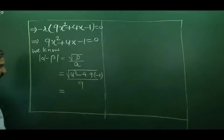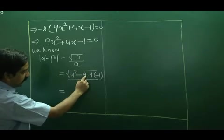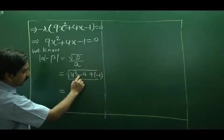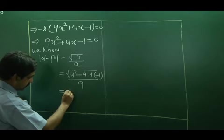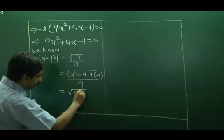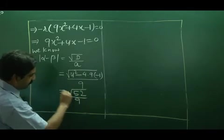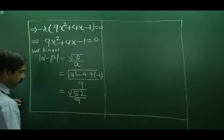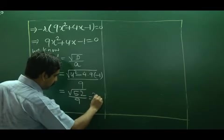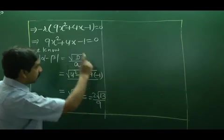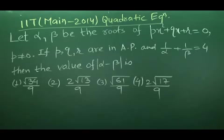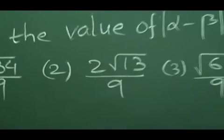Calculate this: 4 square is equal to 16, and 4 into 9 is 36. Minus and minus is plus. It adds root over 52 upon 9. Root 52 can be written as 2 root 13 by 9. According to the question, your option is 2.